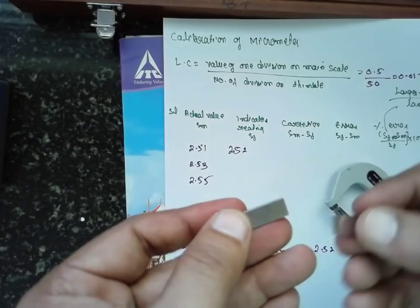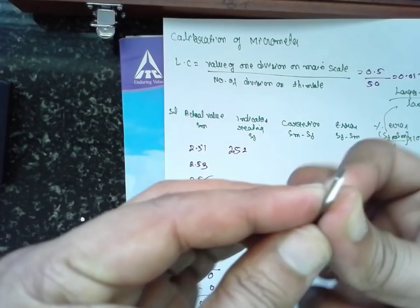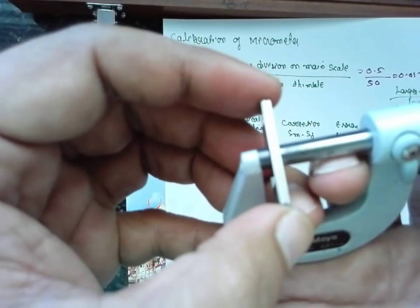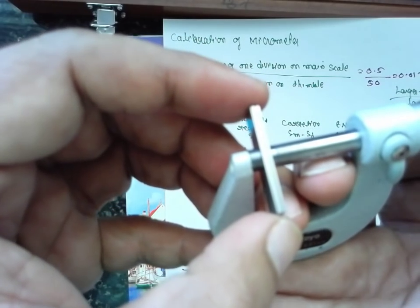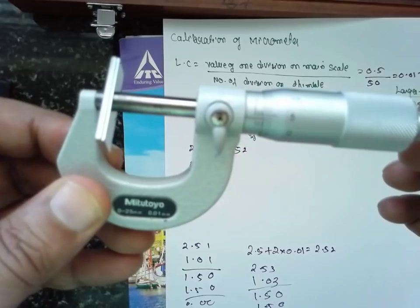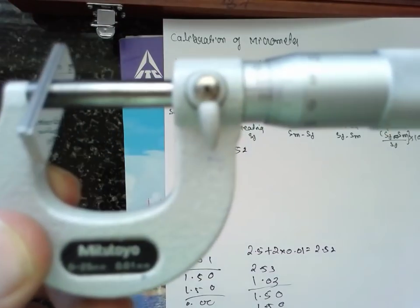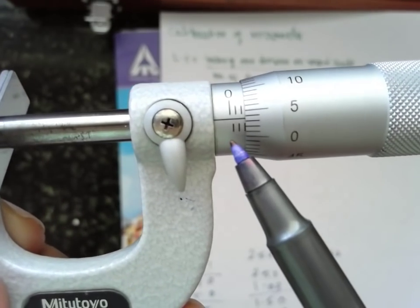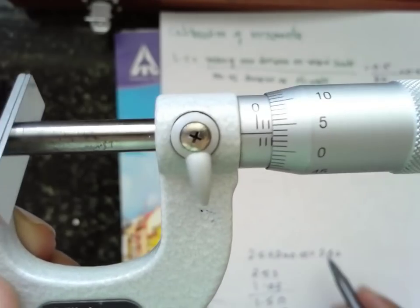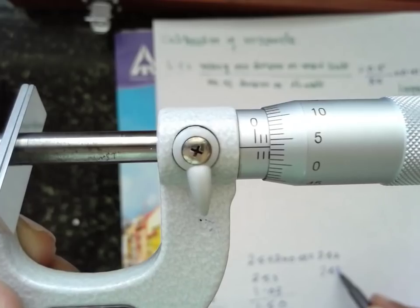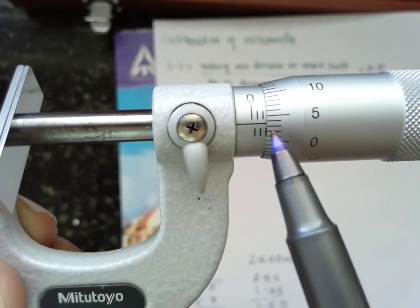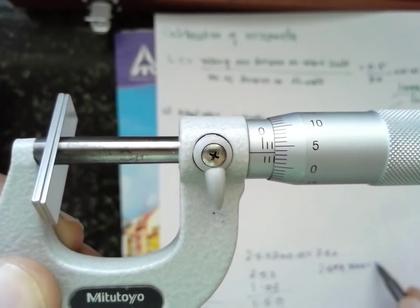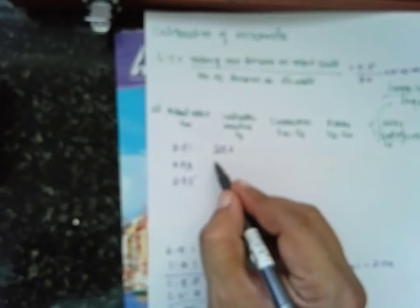1.3, go for ringing phenomena and place between the anvil and the spindle. Small amount of force is required. Don't apply the maximum force. Go for 1, 2, 3 clicking sound. Now reading will be: 0.5, 1, 2, 2.5 is visible. 2.5 plus between 4 and 3. Go for 4 into 0.01. The answer will be 2.54.